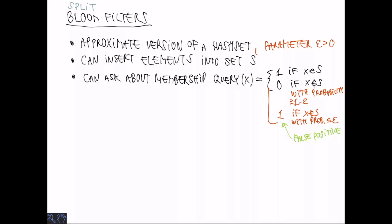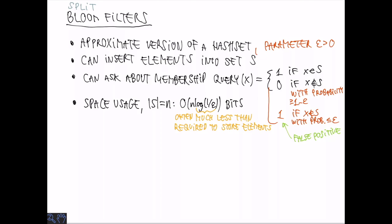With probability at most epsilon it's acceptable to answer 1 or yes even if x is not in the set and with the remaining probability at least 1 minus epsilon we answer 0. So here epsilon is a parameter that determines how often these false positives occur. It turns out that this can be done with space usage that is just O of n log 1 over epsilon bits. For each element in the set we pay just log 1 over epsilon bits which is often much less than what is required to store the elements in the set itself.